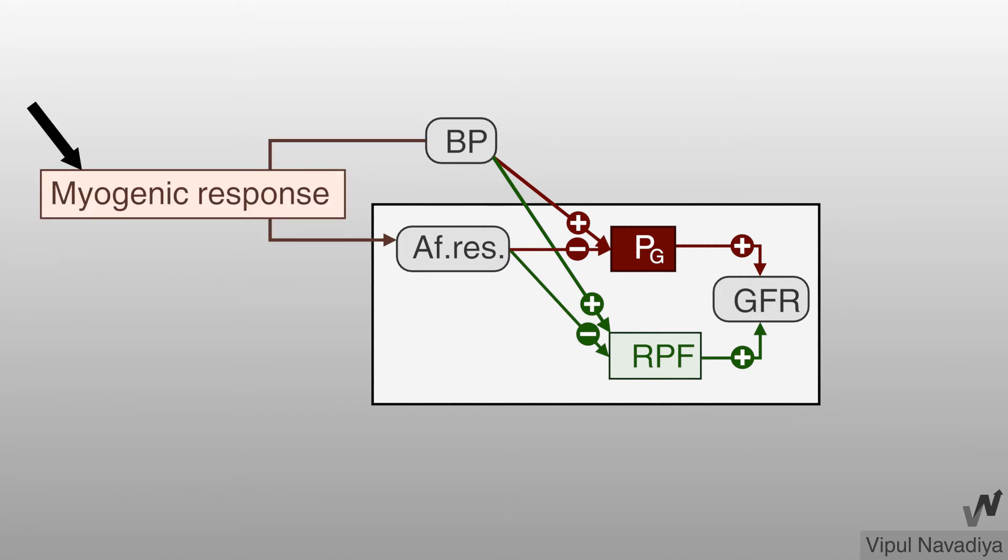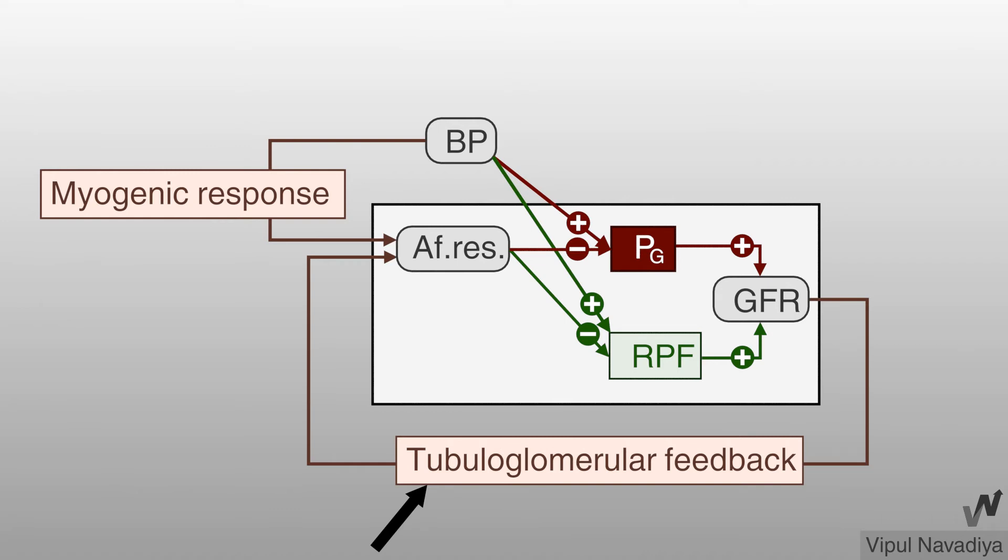Myogenic response and tubuloglomerular feedback. Both of these mechanisms are entirely intrinsic to kidney independent of systemic influences. Now we will see these autoregulatory mechanisms in detail.